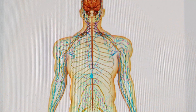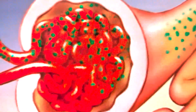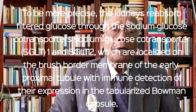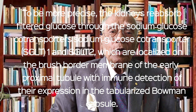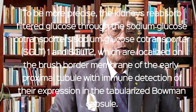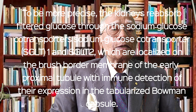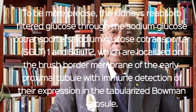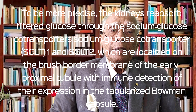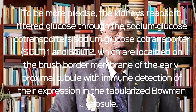Too much blood glucose can damage your organs and nerves, whilst your body doesn't have enough sugar for energy. Normally, blood sugar is absorbed by the liver and 97% of the filtered glucose is reabsorbed in your kidneys through the proximal convoluted tubules. To be more precise, the kidneys reabsorb filtered glucose through the sodium glucose co-transporters SGLT1 and SGLT2, which are localized on the brush border membrane of the early proximal tubule with immune detection of their expressions in the tuberized Bowman's capsule.